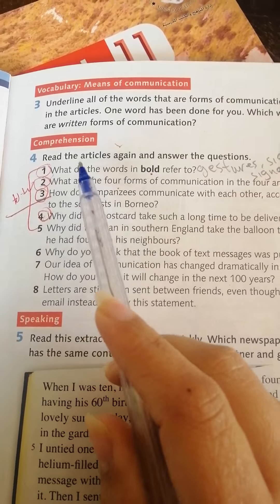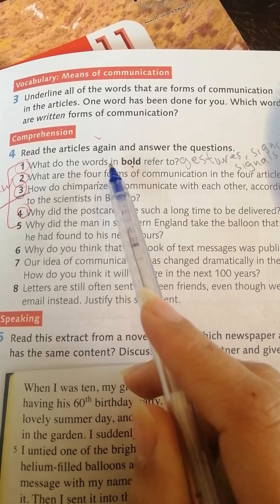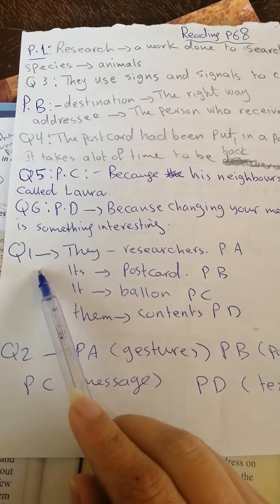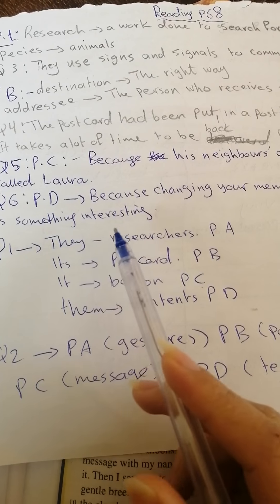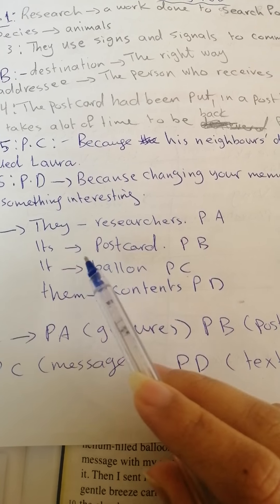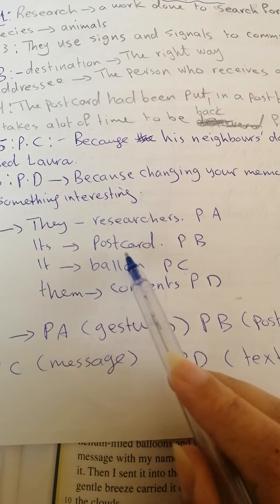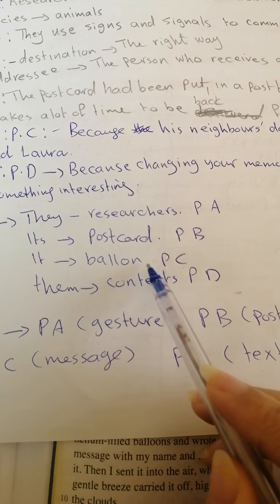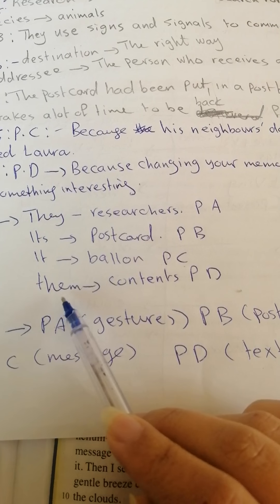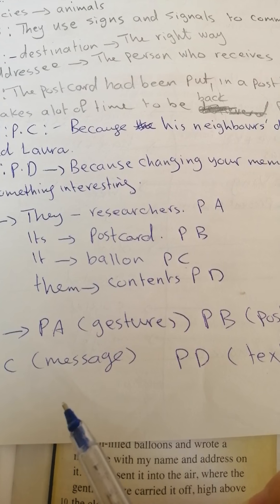Question number one: What do the words in bold refer to? Here is the answer to question one. 'They' in paragraph A refers to researchers. 'It' in paragraph B refers to postcard. 'It' in paragraph C refers to balloon. And 'them' in paragraph D refers to contents.